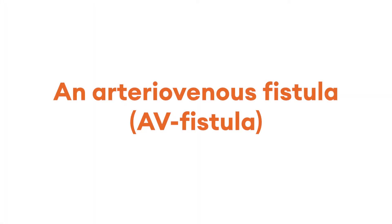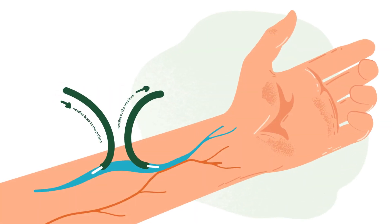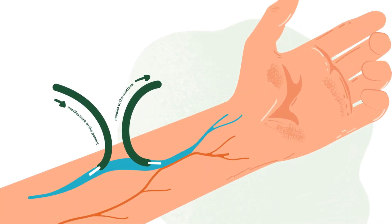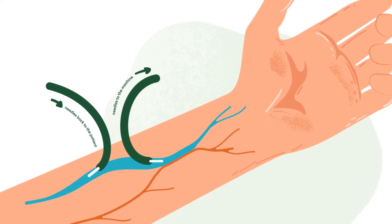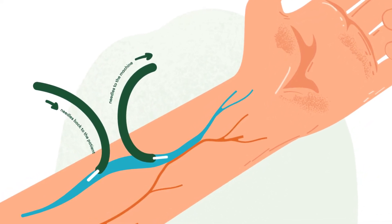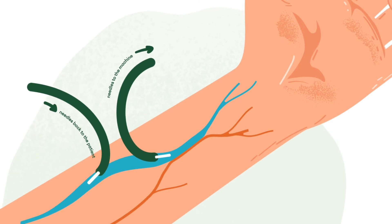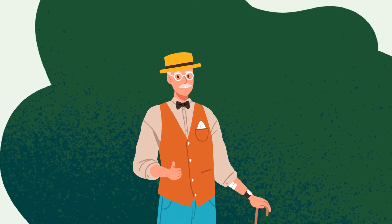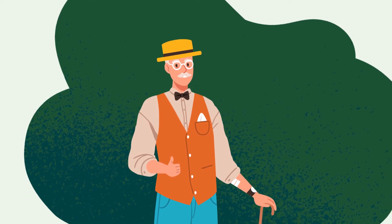An arteriovenous fistula, most often called an AV fistula, is created by joining an artery to a vein during a small operation. The AV fistula is usually situated in your forearm and takes several weeks to fully develop. This is the preferred access type because complications such as clotting and infection are less likely to occur than with other access types. A well-functioning AV fistula can last for many years.